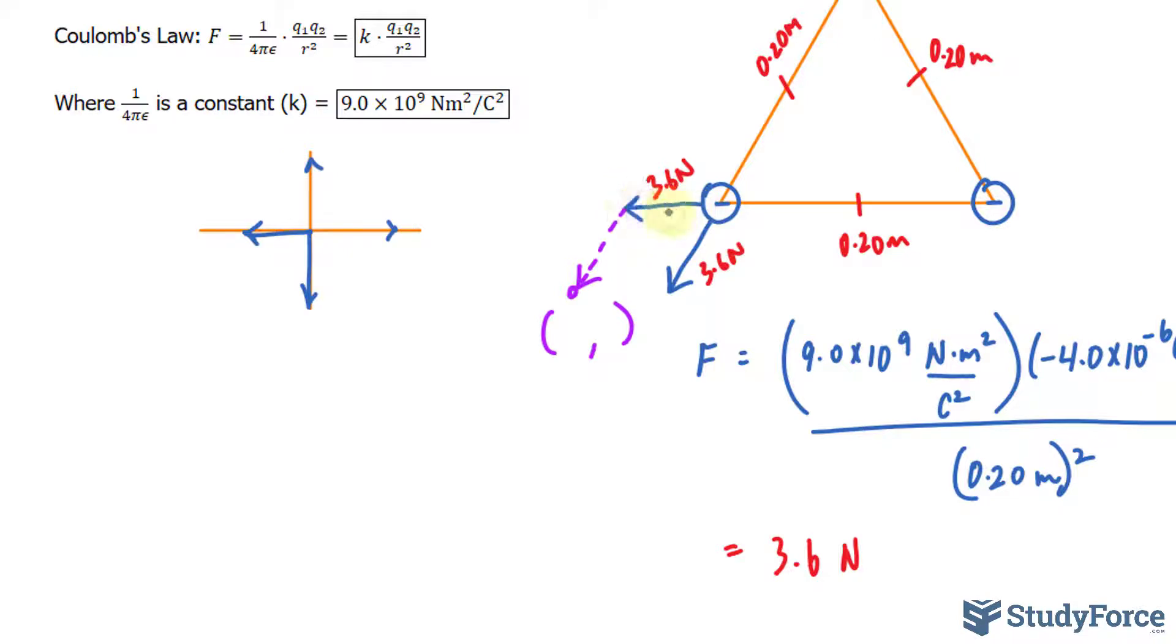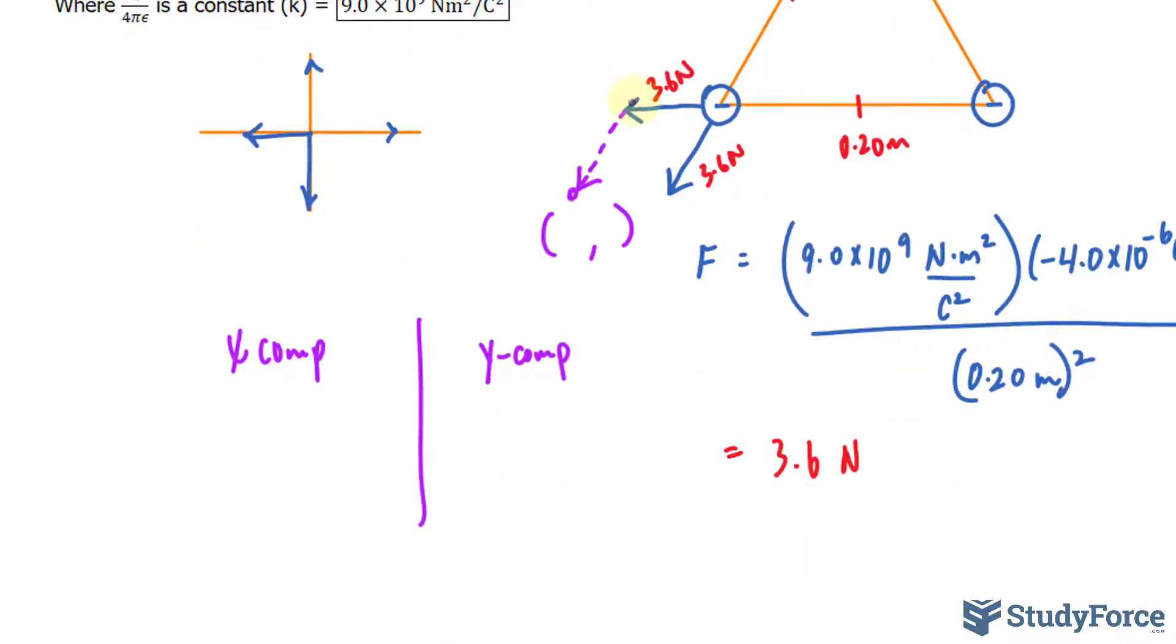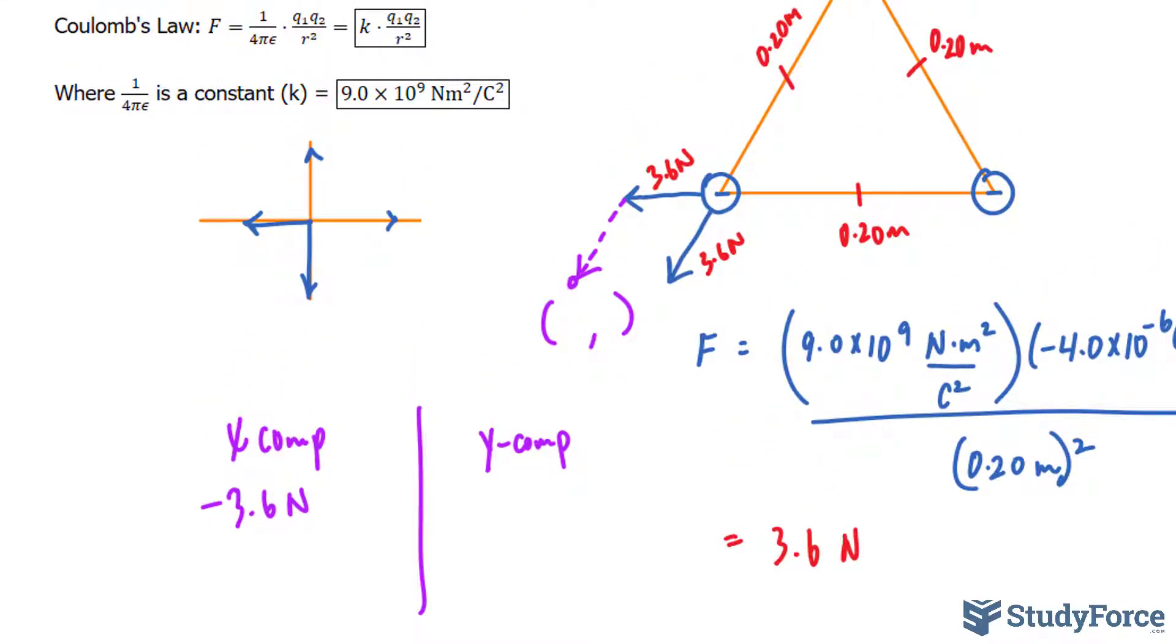So on an xy plane, we'll say that this direction is positive and that direction is positive, whereas going down is negative and going in that direction is negative. For this vector, it does not have a y component. Notice that it is directly on the x-axis. So let's focus on the x components and then the y components. The x component of this vector will be negative 3.6 newtons.